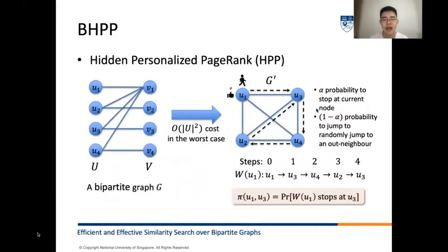In the literature, it has been found that hidden personalized PageRank achieves impressive performance in similarity search in bipartite graphs. Given a bipartite graph G with two distinct node sets U and V, we can construct a graph G' containing only nodes in node set U. Note that this cost can be up to the square of the size of the node set U. HPP is actually the personalized PageRank on the constructed graph G'.